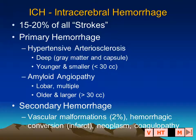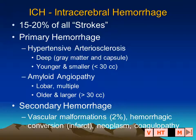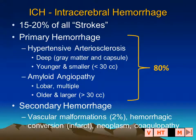Primary hemorrhage may occur in the context of hypertension or amyloid angiopathy, and secondary hemorrhage may occur as a result of pre-existing lesions, including vascular malformations, neoplasm, or in the context of a coagulopathy or hemorrhagic conversion in a stroke. Hypertensive arteriolar sclerosis is the most common cause of a primary spontaneous intracerebral hemorrhage, and combined with amyloid angiopathy account for 80 percent of such lesions.